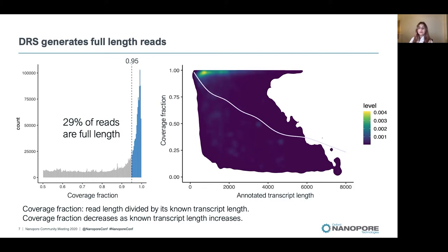Shown on the right is a density plot of the coverage fractions and their annotated transcript lengths along the bottom. The highest density is at the top in yellow, where transcripts of approximately 1 kb long have coverage fractions close to 1. The trend line shows that as annotated transcript length increases, coverage fractions tend to decrease, meaning reads originating from very long transcripts are less likely to be full length.